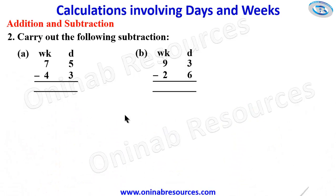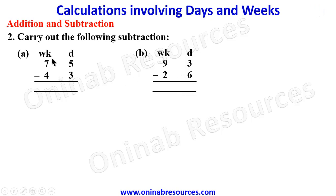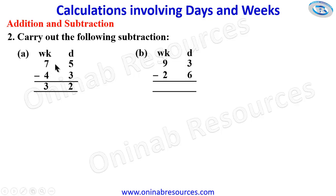That's all for problem 1. We then go to problem 2: carry out the following subtraction. Starting from A, we start with the day column. 5 days minus 3 days gives 2 days. 7 weeks minus 4 weeks gives 3 weeks 2 days. That's all for A.